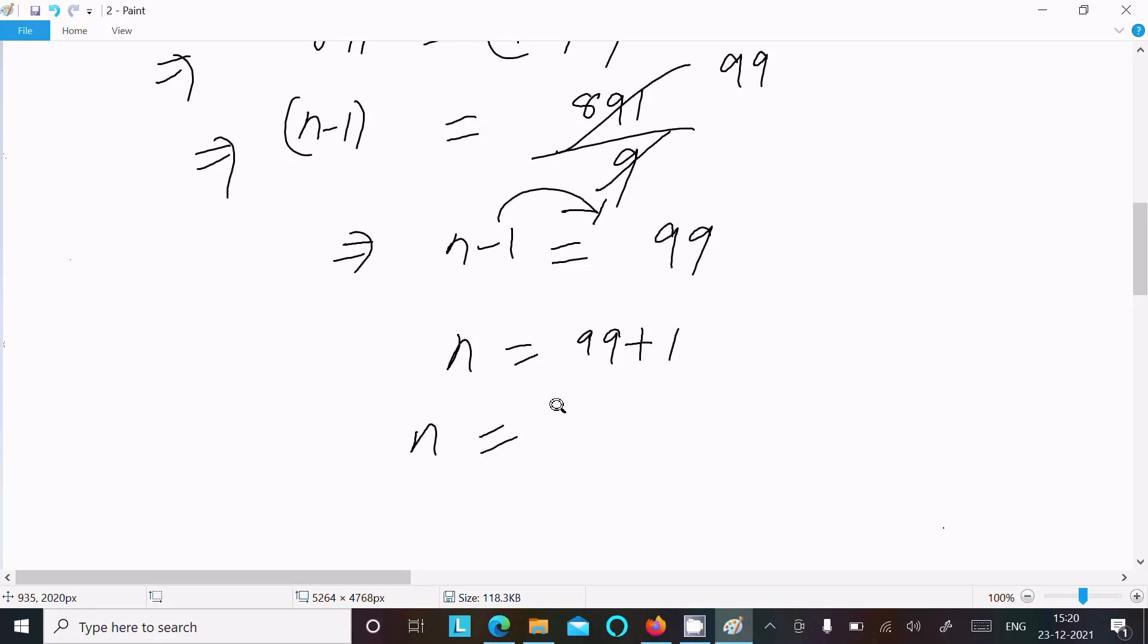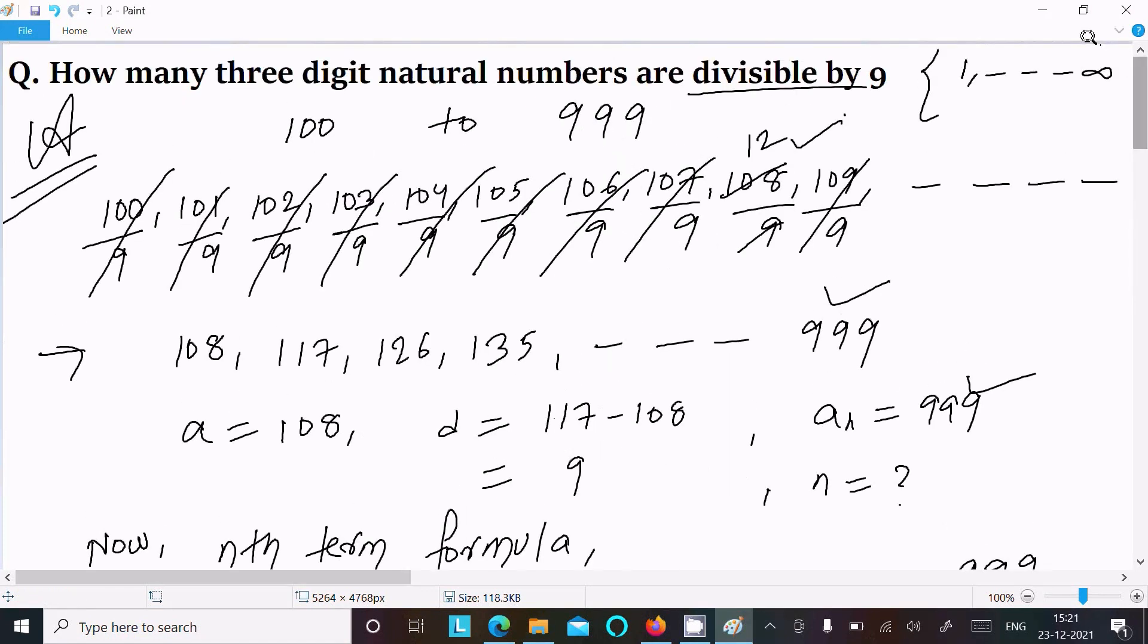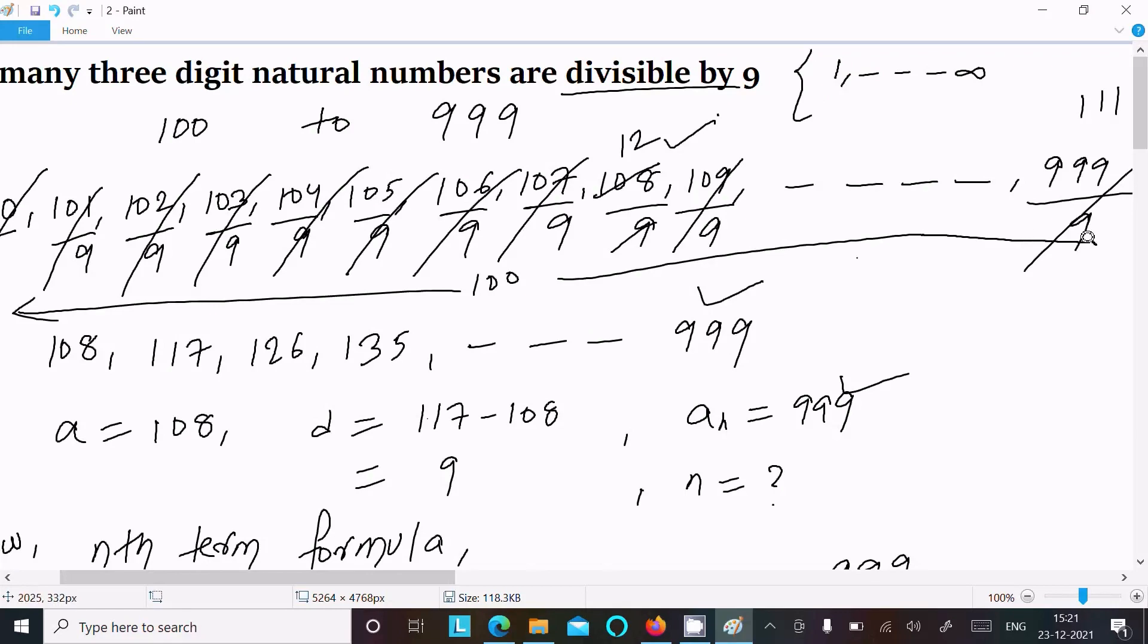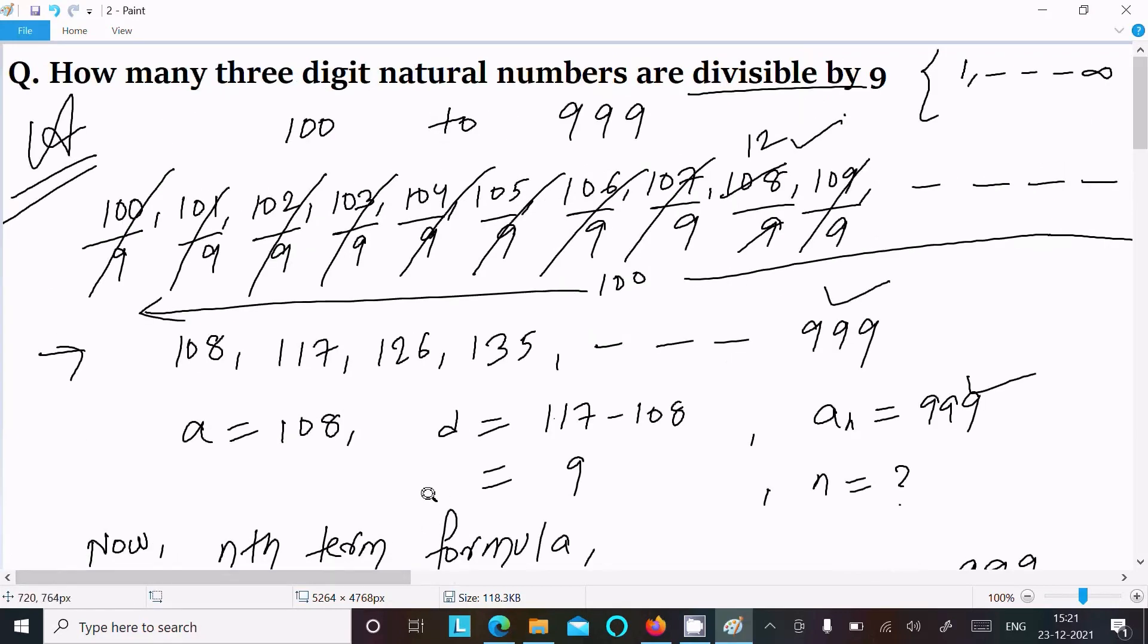So n is 100. How many terms? 100 terms are divisible by 9. From this, a total of 100 three-digit numbers are divisible by 9.